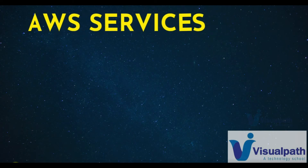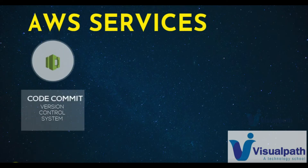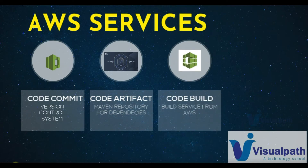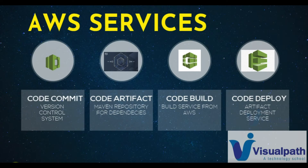Let's see the AWS services we are going to use to set up this continuous integration pipeline. Starting with CodeCommit, which will be our version control system — our remote repository. The next service is CodeArtifact — Maven is going to download dependencies from the CodeArtifact repository. We'll use CodeBuild to run our build process, running Maven build and SonarQube code analysis. AWS CodeDeploy will deploy our artifact, and in this project we're going to deploy our artifact to an S3 bucket.